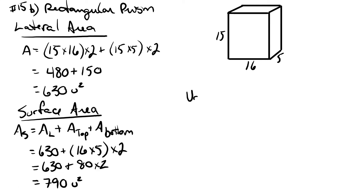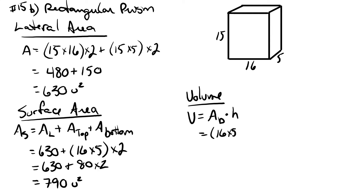Finally, we calculate the volume by taking the area of the base and multiplying by the height. The area of the base is sixteen times five, and we multiply that by the height of fifteen. Multiplying them all together we end up with twelve hundred units cubed.